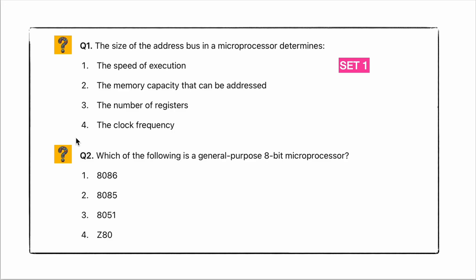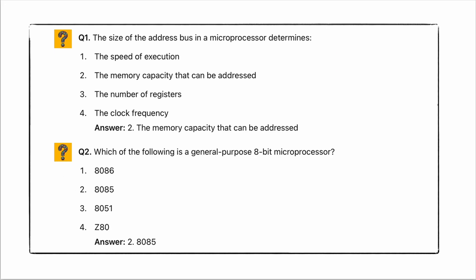Next question: which of the following is a general purpose 8-bit microprocessor? Options are correct. Coming to the answer: the size of the address bar in a microprocessor determines the memory capacity that can be addressed. A general purpose 8-bit microprocessor relates to memory capacity.